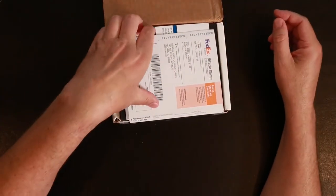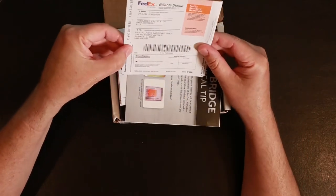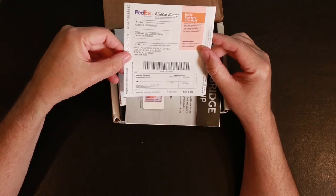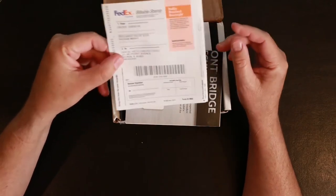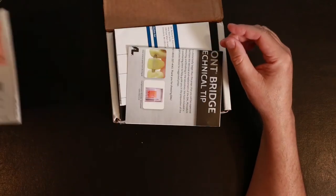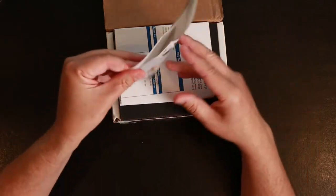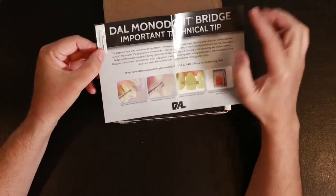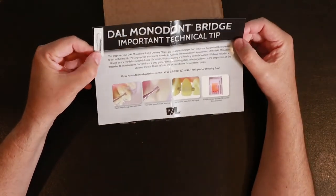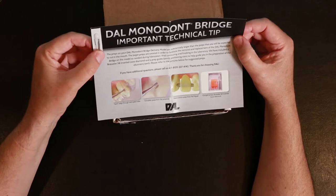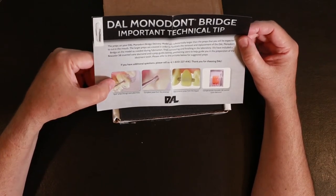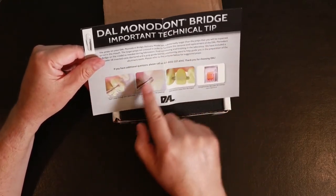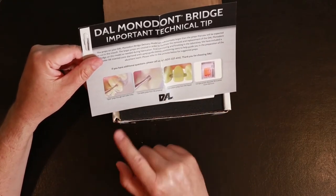Inside, first thing is just another FedEx Express shipping labels for the next case I send them. Put that to the side. Next thing in here is actually a burr for the dental drill. This is like a particular shape that they want you to use to make the preps for the Maryland bridge and explains a little bit how to do it.